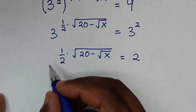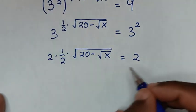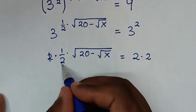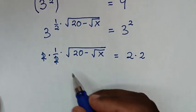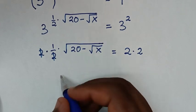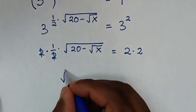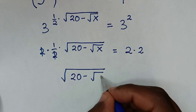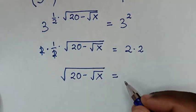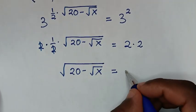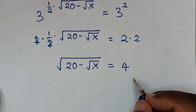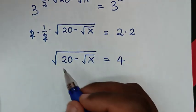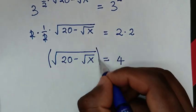In the next step, to remove the denominator of 2, we multiply both sides by 2. The 2s cancel on the left, giving us: √20 minus √x equals 4.